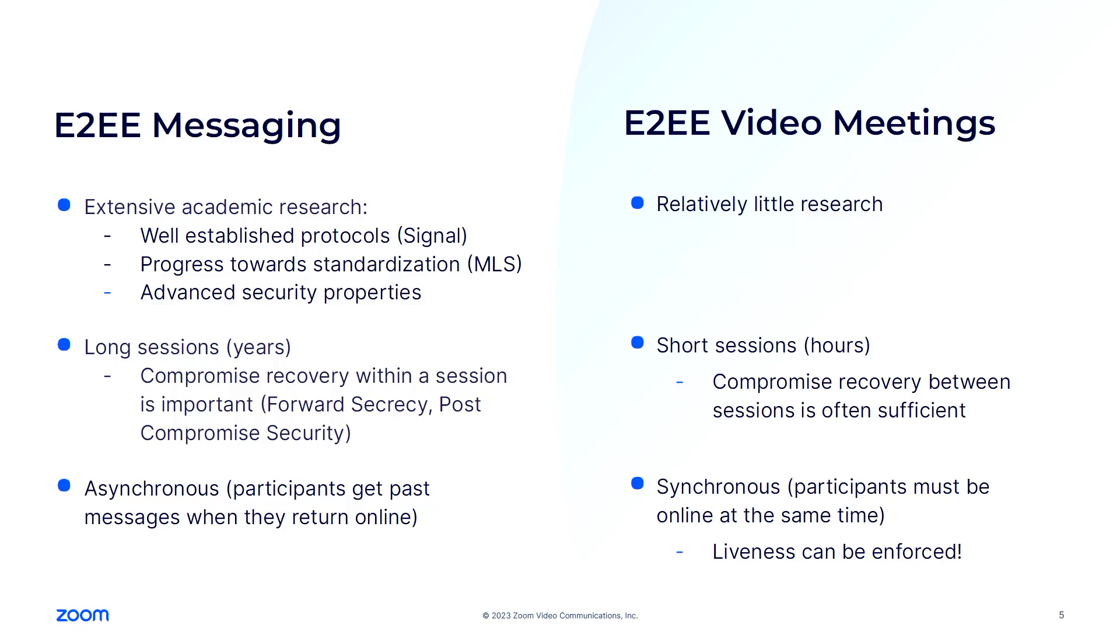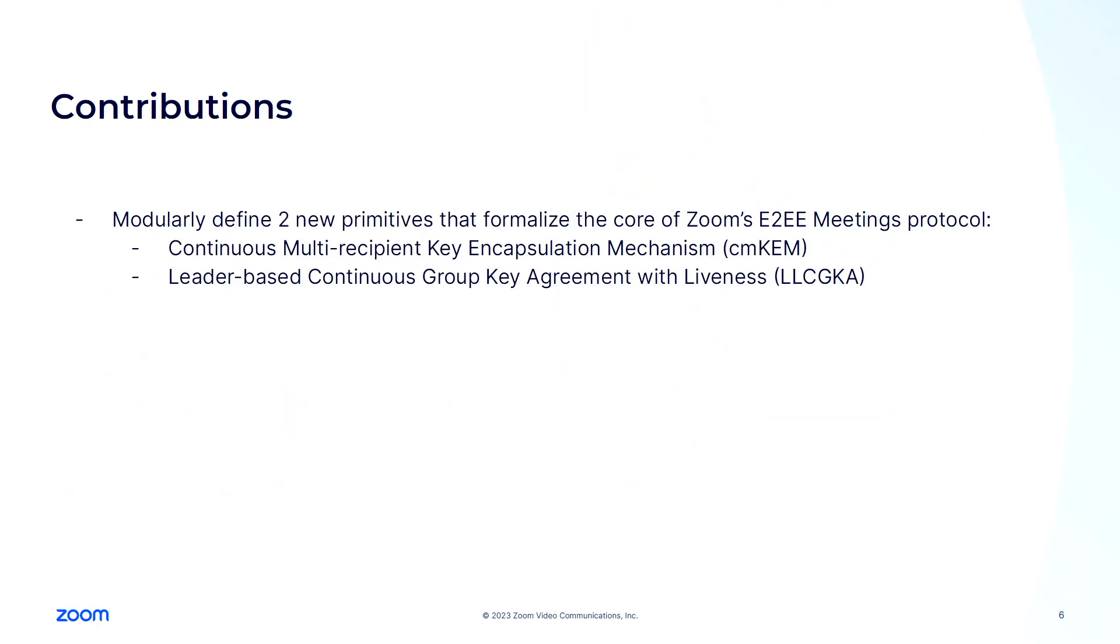While maybe in the meeting space, since the sessions are so short, it is enough if your meeting remains confidential as long as your client is compromised either before or after the meeting, if this allows for simpler and more efficient protocols. Another important difference is that meetings are synchronous. So one thing that we can do on this side of the spectrum is enforce liveness. By liveness, I mean, for example, that if the host of a meeting kicks someone out of the meeting and rotates the key, the other participants need to learn about this within a short time frame.